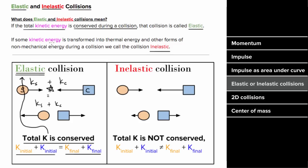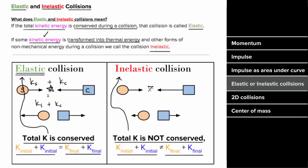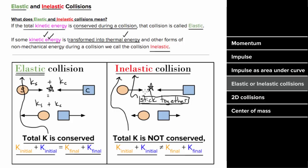For an inelastic collision, kinetic energy is not conserved. The total initial kinetic energy of the sphere plus cube would not equal the total final kinetic energy. Typically, some of that kinetic energy is transformed into thermal energy. If the masses stick together, the collision is called a perfectly inelastic collision, since the most kinetic energy is transformed into thermal energy — and sticking together is a surefire sign of an inelastic collision.